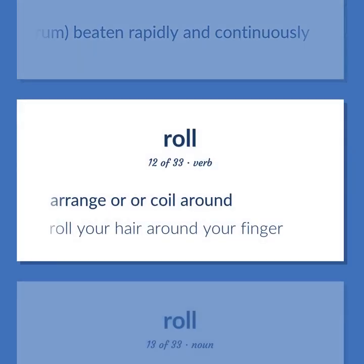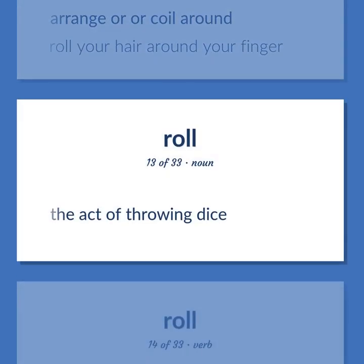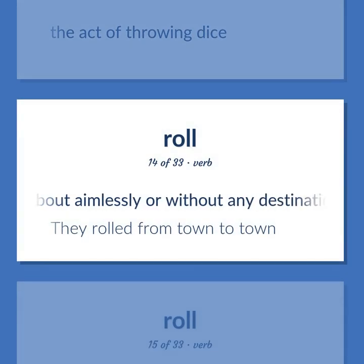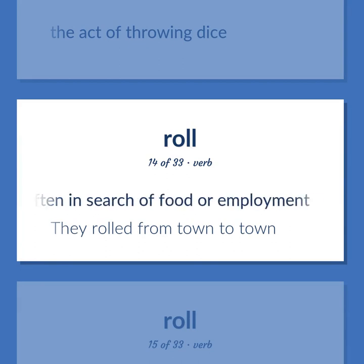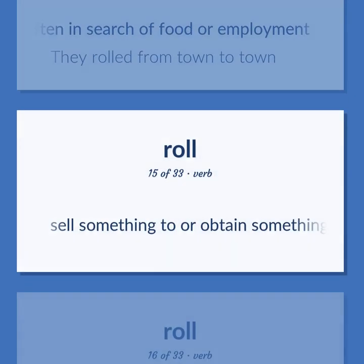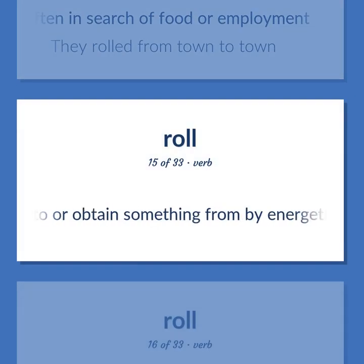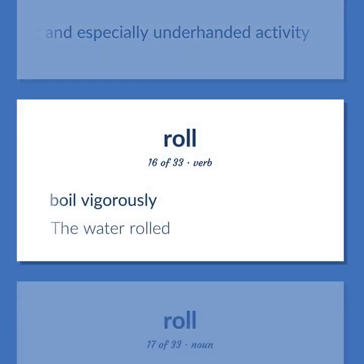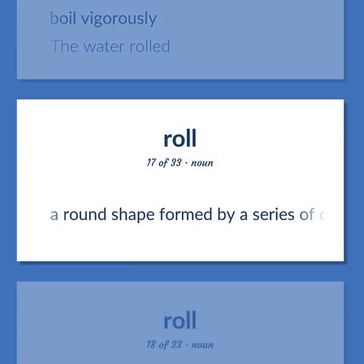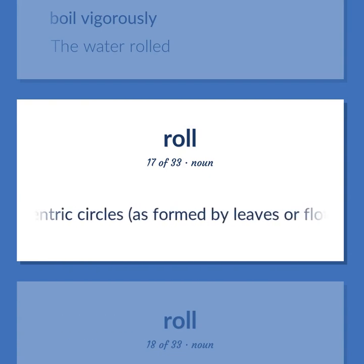Arrange or coil around — roll your hair around your finger. The act of throwing dice. Move about aimlessly or without any destination, often in search of food or employment — they rolled from town to town. Sell something to or obtain something from by energetic and especially underhanded activity. Boil vigorously — the water rolled. A round shape formed by a series of concentric circles, as formed by leaves or flower petals.